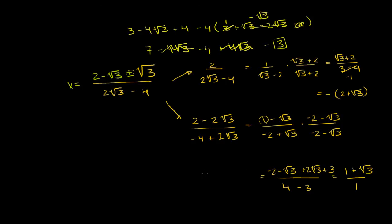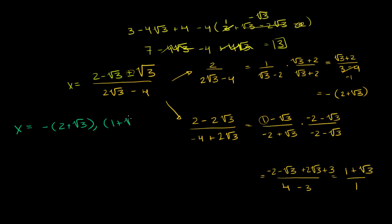This is kind of exciting — this was an unbelievably hairy problem. And if any of you know a faster way to do this problem, let me know; I've thought about it a lot and it doesn't seem like there is one. So my two possible x values are negative 2 plus square root of 3, or 1 plus square root of 3.